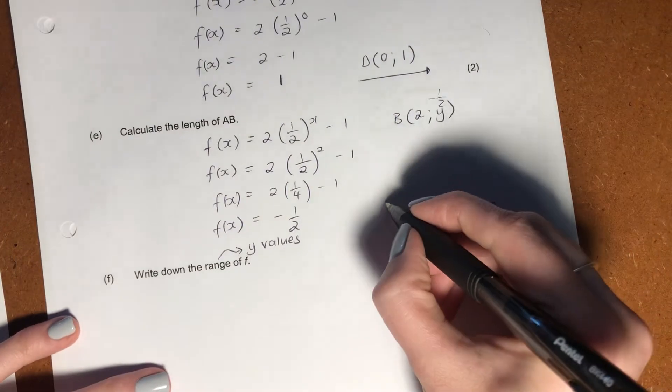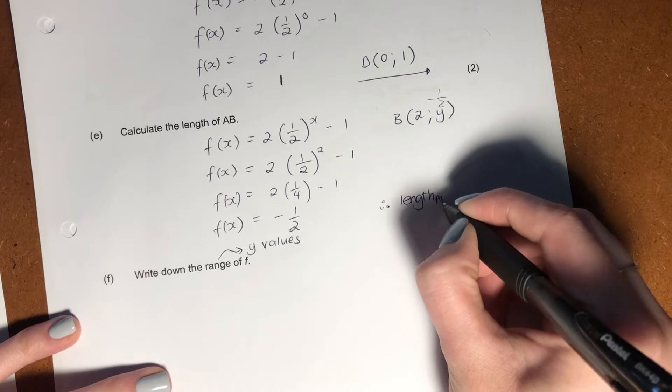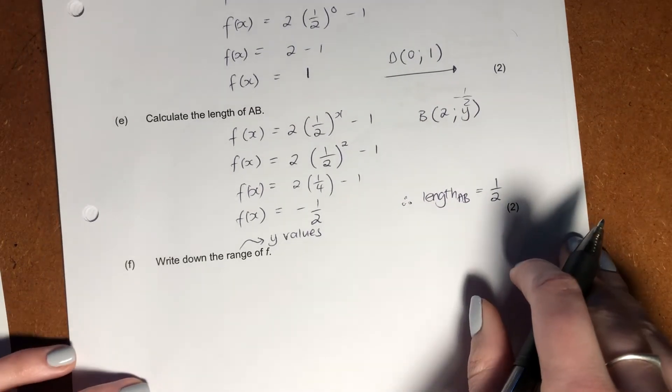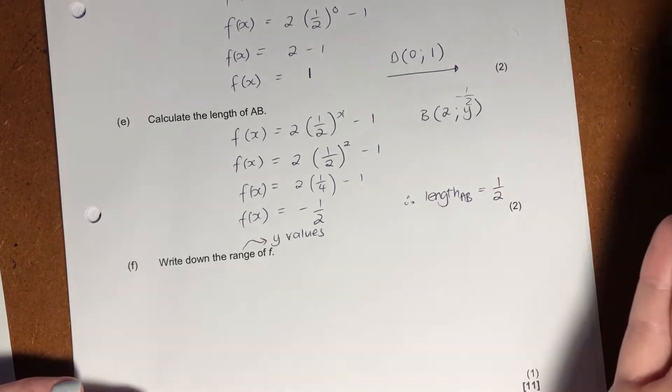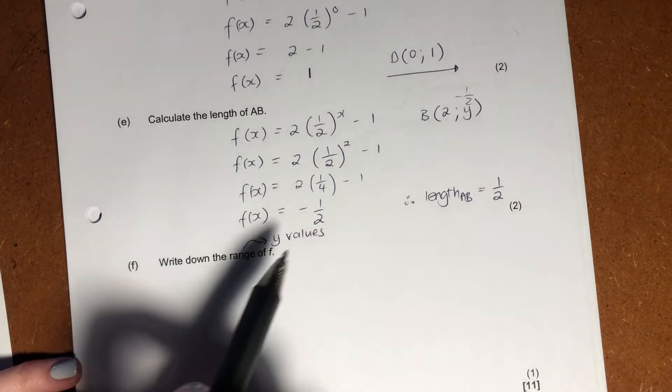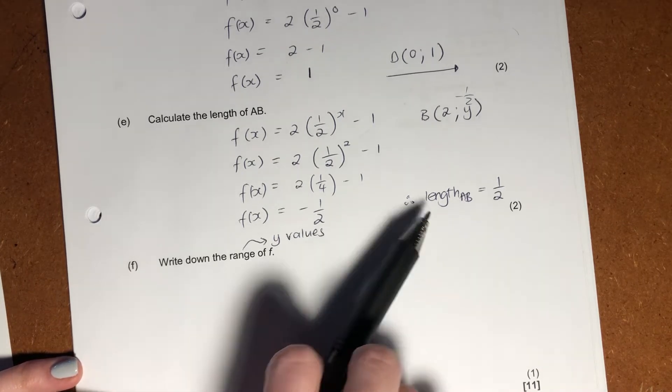So you then have to say, therefore, my length, right? AB equals 1 half. So please make sure that you are writing out and answering the question that's asked and not just part of the question because that's the problem. As students get here and they've done all the hard work, but then they don't give me the conclusion. So be careful about that.